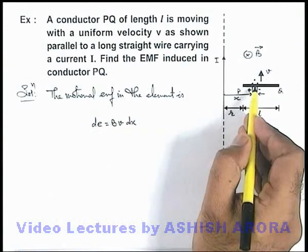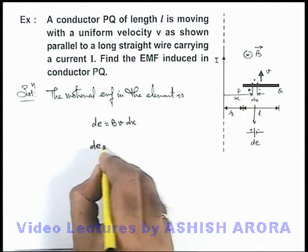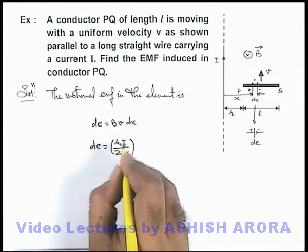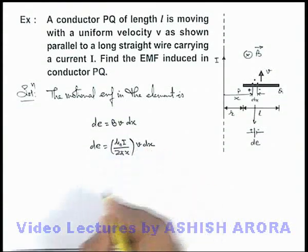And the magnetic induction at the location of this element due to the wire we can directly write, which is given as μ₀I/(2πx) - this is the magnetic induction due to the wire at a distance x, multiplied by v into dx.